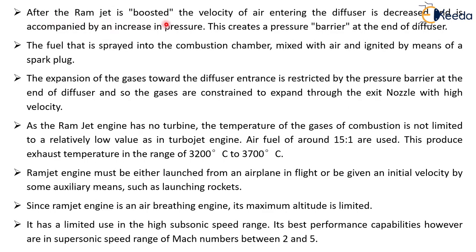After the Ramjet is boosted, the velocity of air entering the diffuser is decreased and there is an increase in pressure. This creates a pressure barrier at the end of the diffuser. The fuel is sprayed into the combustion chamber, mixed with air, and ignited by means of a spark plug. The expansion of the gases toward the diffuser entrance is restricted by this pressure barrier, so the gases are constrained to expand through the exit nozzle at high velocity.